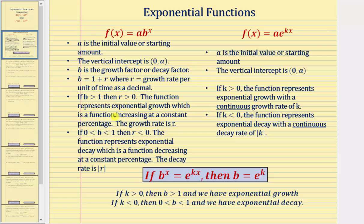If the base b is between zero and one, then r is less than zero or negative, so we have exponential decay, with a decay rate per unit of time equal to the absolute value of r. The growth or decay rate is per unit of time — it could be per year, per quarter, per month, and so on.